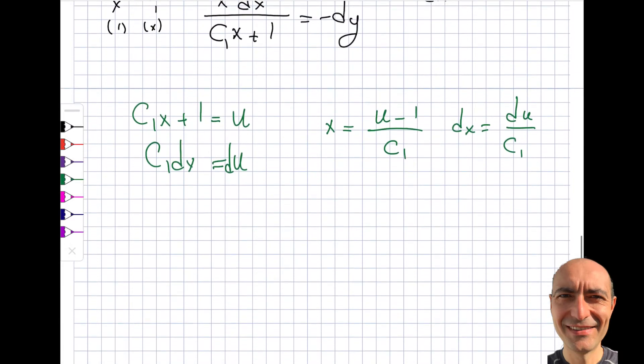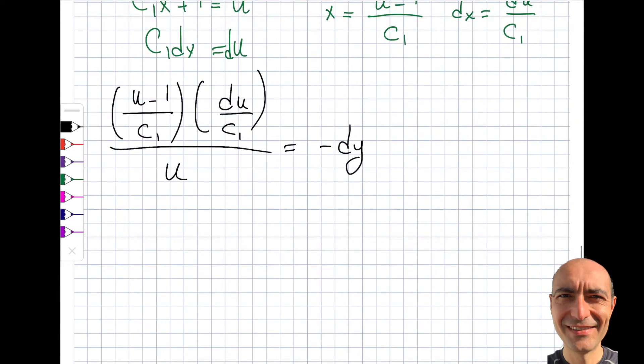c1 dx is equal to du. And let's look at x because I'm going to plug that in. So from here, the x becomes u minus 1 by c1, and dx becomes du by c1. I simply re-manipulated this around to get this and this because I'm going to use x right here and dx right here. So x is u minus 1 by c1, and the dx is du by c1, divided by u. c1x plus 1 is u, is equal to minus dy.